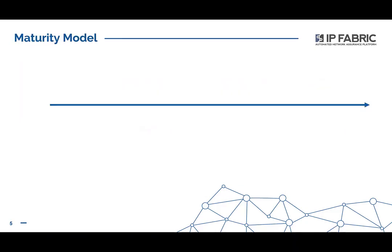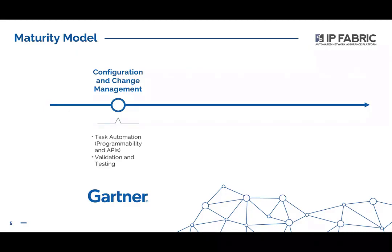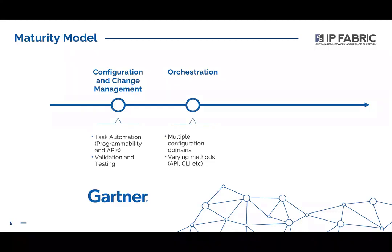Gartner also suggests a maturity model for network automation that starts with configuration and change management — the classic view of being able to gather configuration data from network devices and then write back changes as required. This might mean a screen-scrape approach to automating CLI or, in more advanced cases, using an API. Fundamental to all of this is the ability to validate the success of changes through automated testing. The next stage is orchestration: building a workflow of automated tasks across a number of different configuration domains with branching and looping logic if necessary, potentially using CLI for one platform and API access for another, combining tasks to achieve a single outcome.